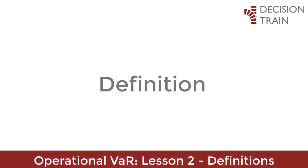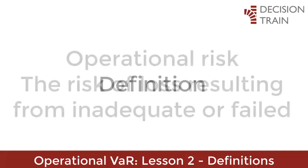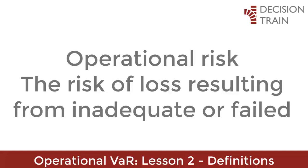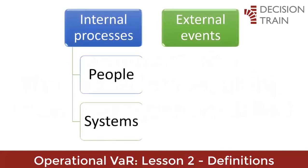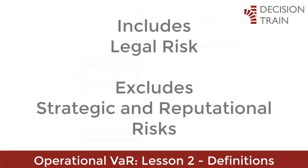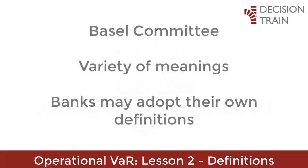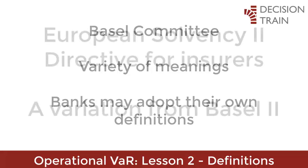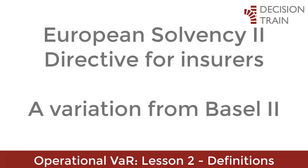Let's start with the definition. According to the Basel Committee, in the context of a financial or banking institution, operational risk is the risk of loss resulting from inadequate or failed internal processes, people, and systems, or from external events. This definition includes legal risk but excludes strategic and reputational risk. The Basel Committee recognizes that operational risk is a term that has a variety of meanings, and therefore for internal purposes banks may adopt their own definitions of operational risk, provided that the minimum elements are included in the committee's definition.